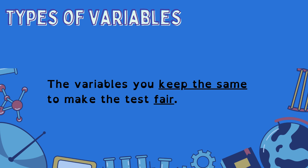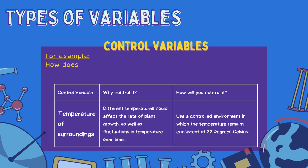Again, let's look at some examples. For the first question — how does the amount of light affect how tall a plant grows? — something we'd like to control would be the temperature of the surroundings. We usually have multiple control variables for each experiment. Different temperatures could affect the rate of plant growth, as well as fluctuations in temperature over time. To control this, we'll use a controlled environment in which the temperature stays consistently at 22 degrees Celsius. Note how specific details are added to how we will keep this the same.